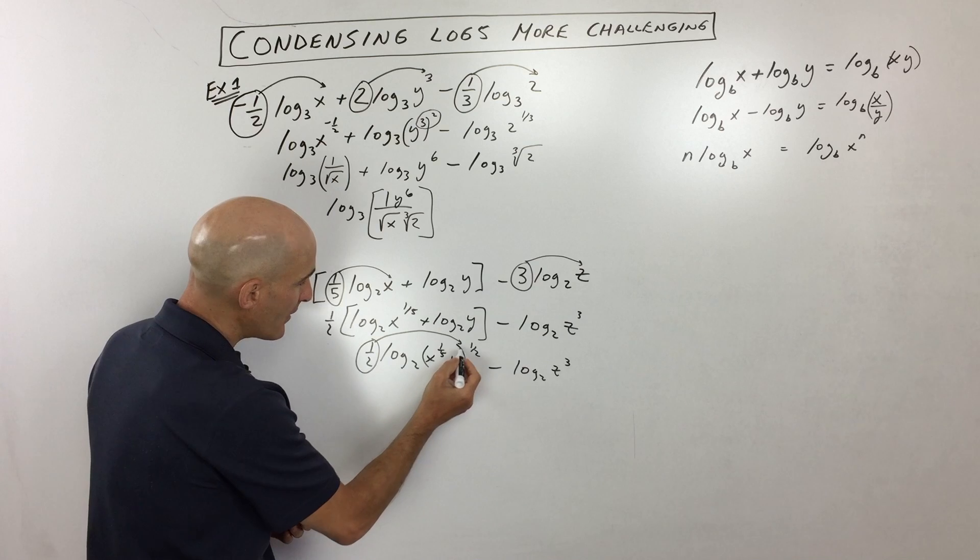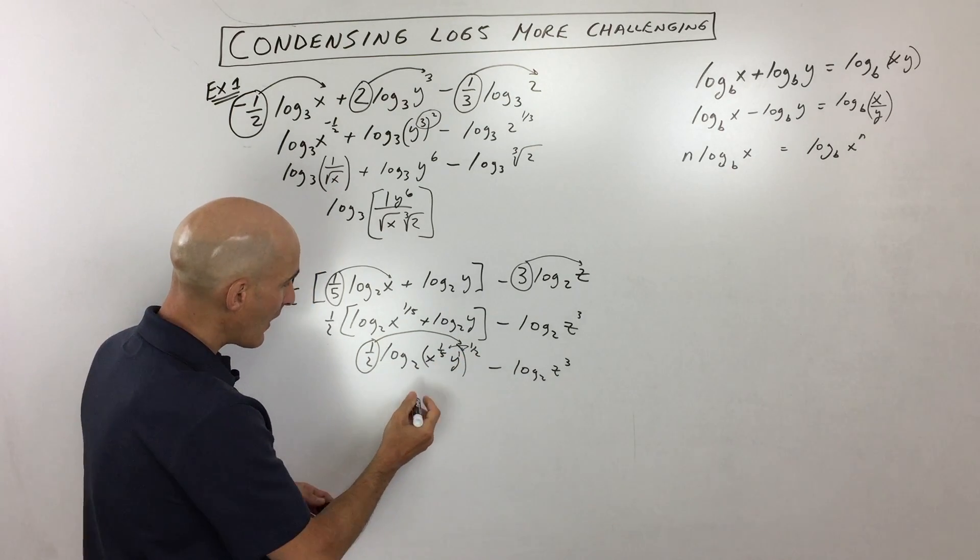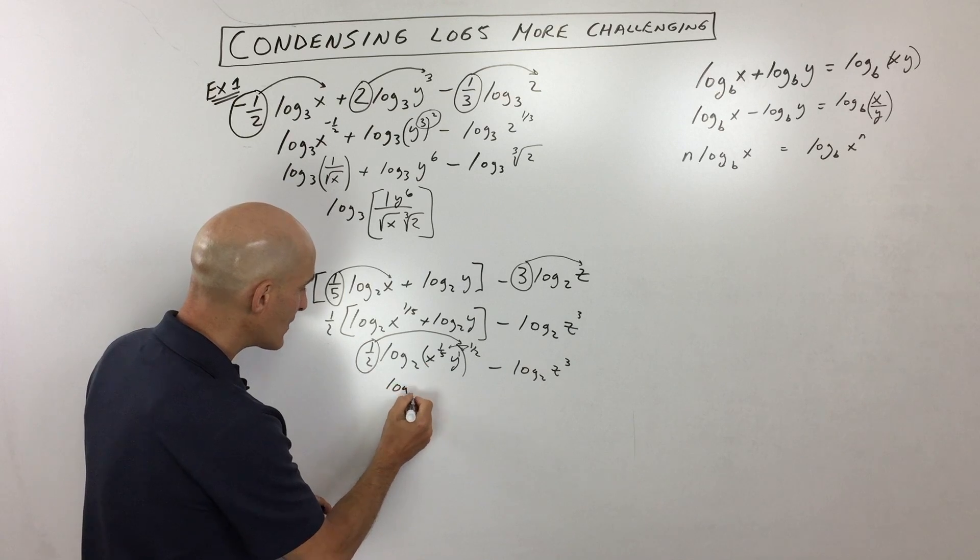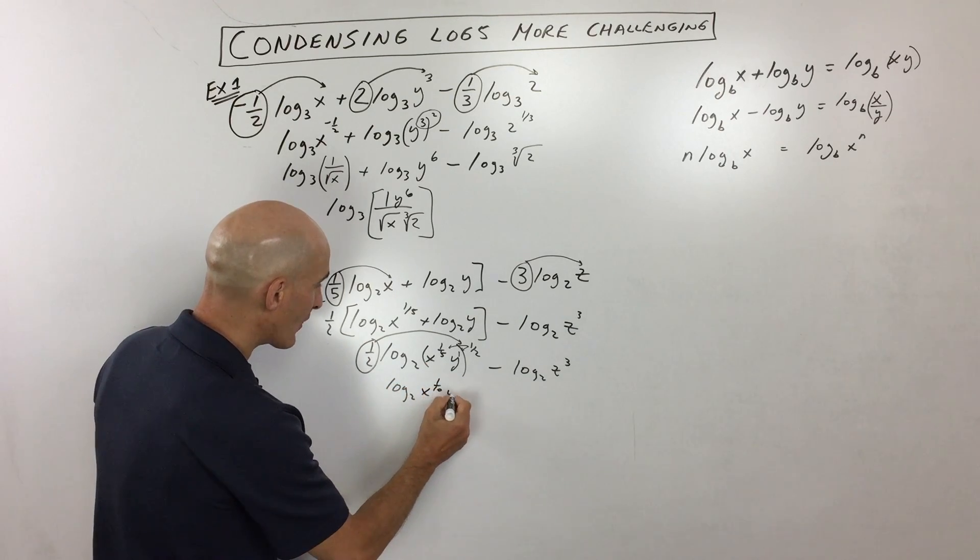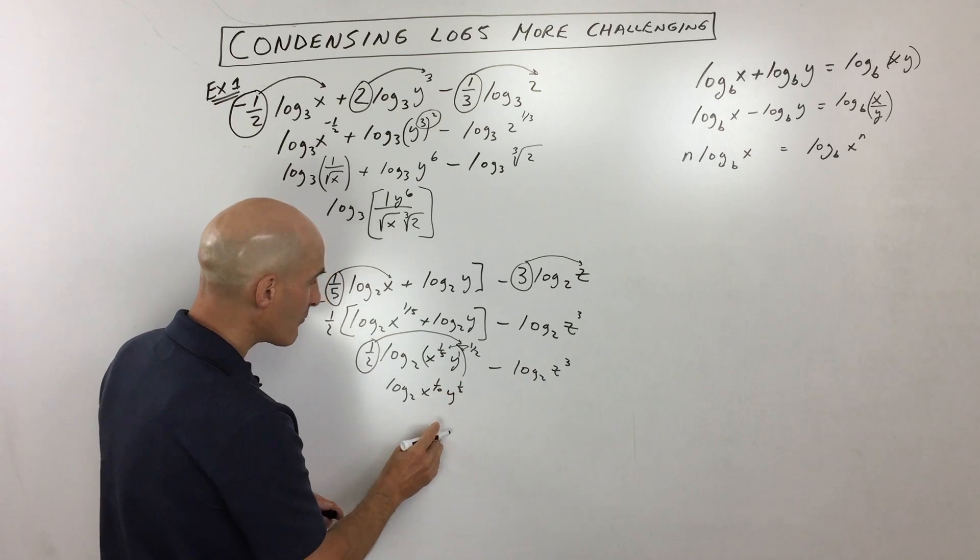So we don't see it, but there's actually a 1 there. But what I'm going to do is I'm going to distribute that 1 half to both of those exponents. So we have log base 2 of x to the 1 10th power now, y to the 1 half power.